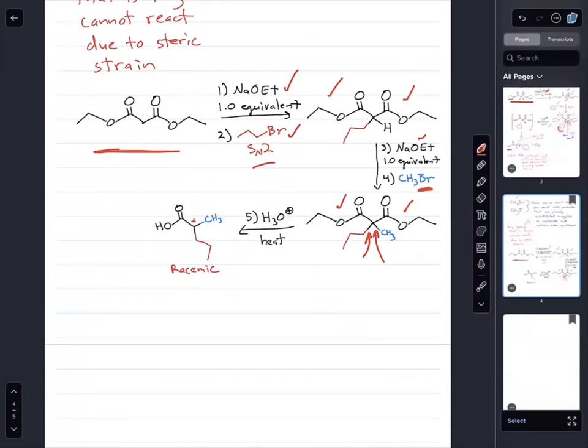So even though we made two new carbon-carbon bonds, we did not create a chiral center. However, when we hydrolyze those two esters to create the beta-diacid, the malonic acid derivative, that will then decarboxylate. We're going to break this carbon-carbon bond to generate this carboxylic acid product.